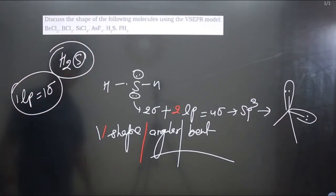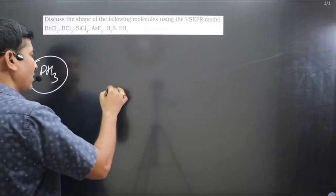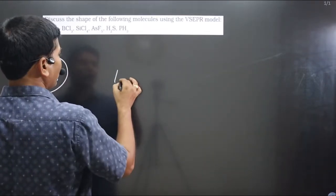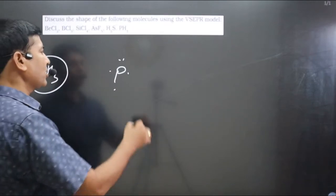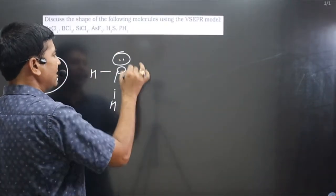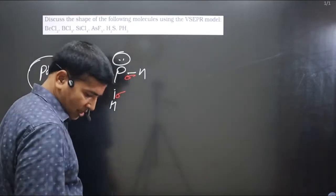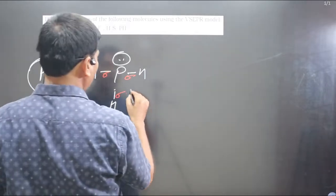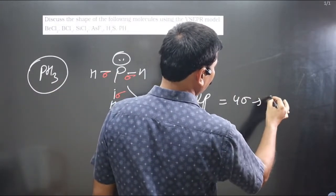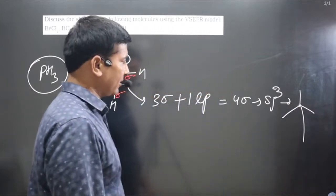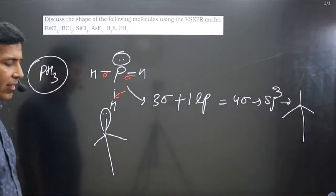Next is PH₃. Phosphorus is present in the 15th group and has five valence electrons. Each hydrogen forms a single bond. The central element phosphorus has one lone pair. We count three sigma bonds plus one lone pair, which equals four — giving sp3 hybridization. The regular geometry is tetrahedral.